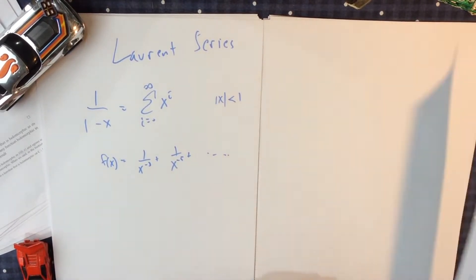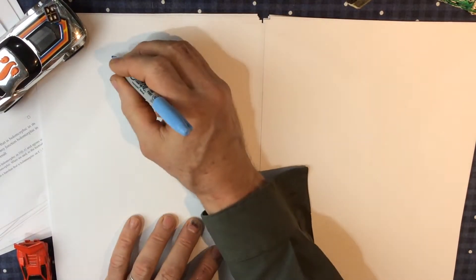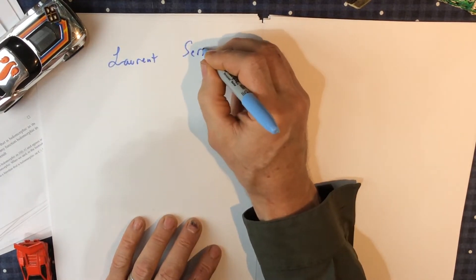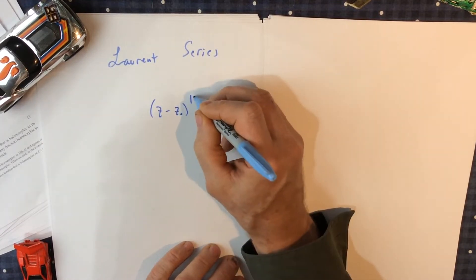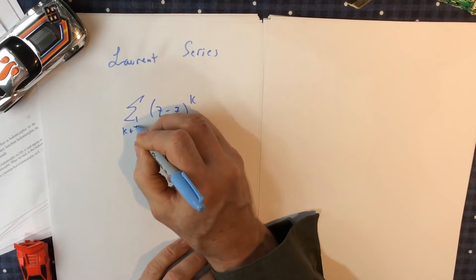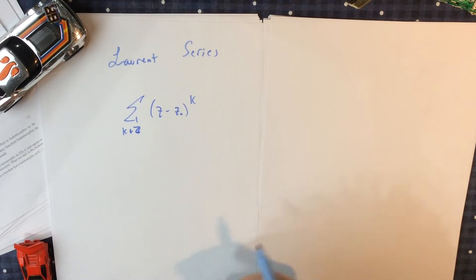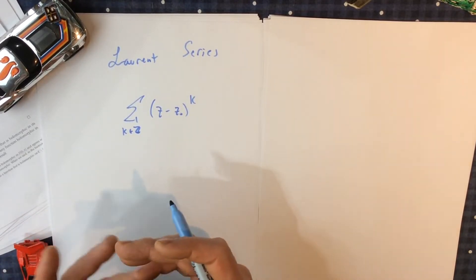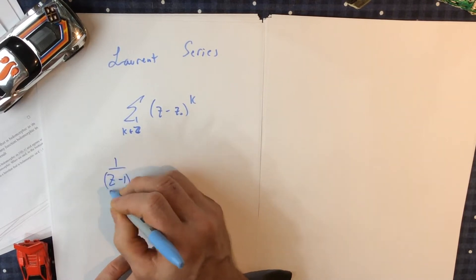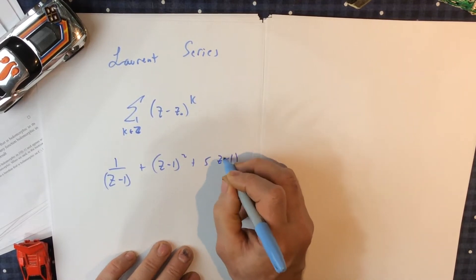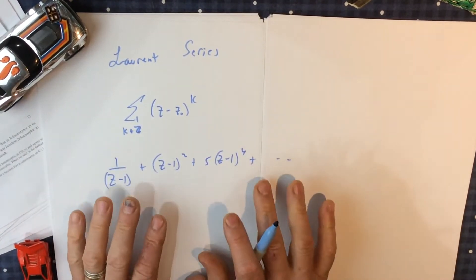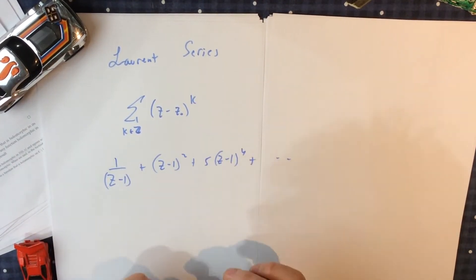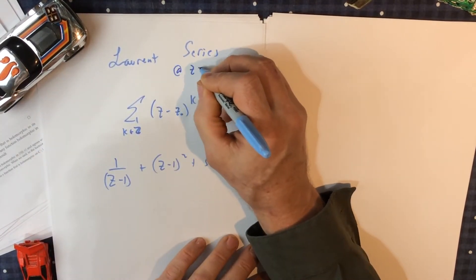The formal definition of a Laurent series is that it can be centered at any point. Instead of z minus 0, it's z minus z-naught to the k-th power, where k is an integer. So you can use positive and negative powers. Without some of the negative powers, we wouldn't call it a Laurent series. A Laurent series could have just one negative term — for example, 1 over (z minus 1) plus (z minus 1) squared plus 5(z minus 1) to the 4th. It takes just one negative power piece for it to be a Laurent series, centered at z equals z-naught.